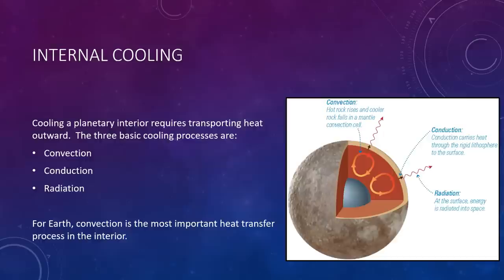Those are the three heating processes. We also have three cooling processes. Cooling a planetary interior requires transporting heat outward. Just as there are three basic heating processes for planetary interiors, there are also three basic cooling processes. The first is convection.